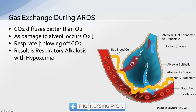As the damage to the alveoli occurs, oxygen starts to decrease. The patient is going to respond to that decrease in oxygen by increasing their respiratory rate, which in turn will blow off more CO2 because CO2 is still diffusing — it diffuses better than oxygen. The result is going to be respiratory alkalosis with hypoxemia, which is exactly what we had in our blood gas.